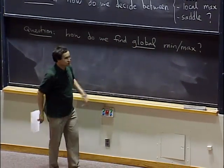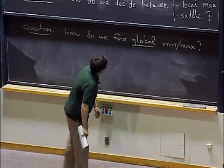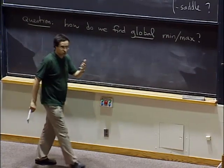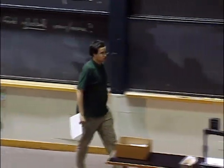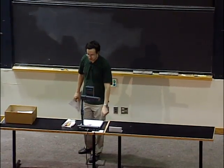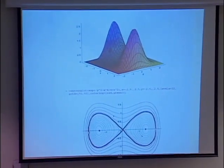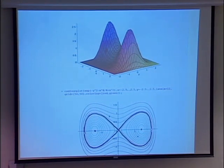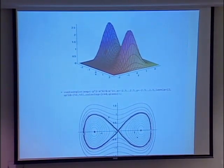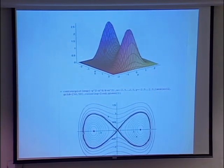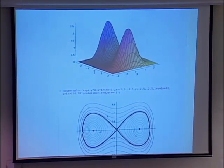To decide where the function is the largest, in general you'll have to compare values. For example, if you want to know the maximum of this function, we have two obvious candidates — this local maximum and that local maximum. The question is which one is higher. In this case they are exactly tied, but in general you would have to compute the function at both points and compare.